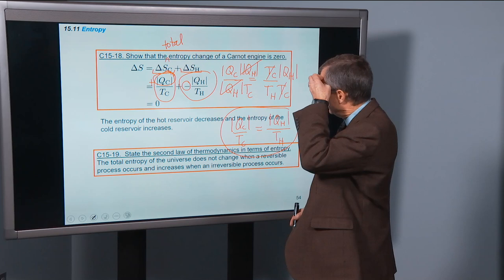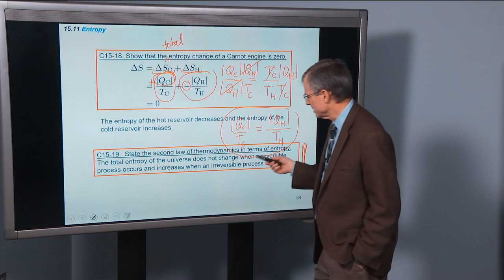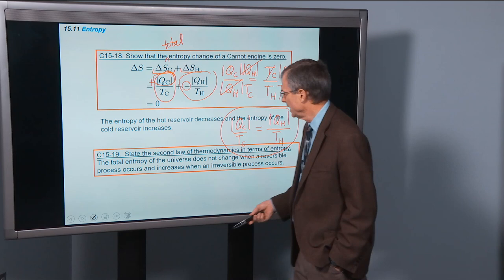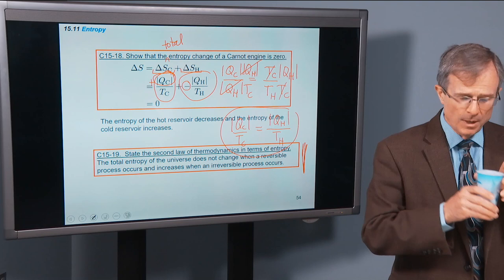And this is the statement that captures this. It's really a restatement of the second law of thermodynamics. The total entropy of the universe does not change when a reversible process occurs, like the Carnot engine, and does increase when an irreversible process occurs. It's called the law of increase of entropy.